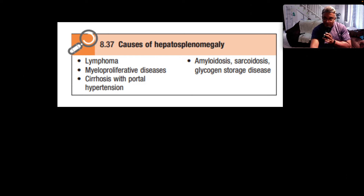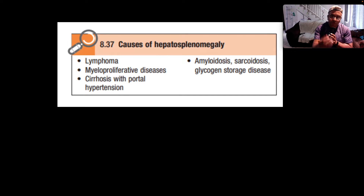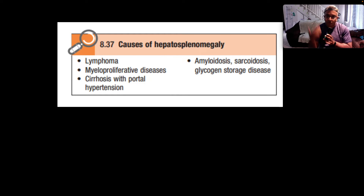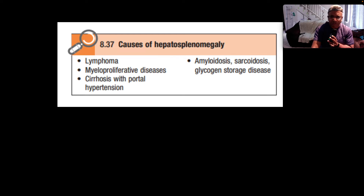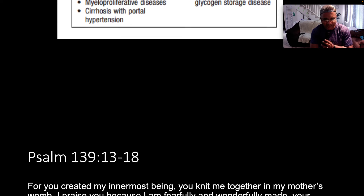Here are causes of hepatosplenomegaly: most likely lymphoma, myeloproliferative disease, cirrhosis, portal hypertension, or amyloidosis, sarcoidosis, glycogen storage diseases like Hunter's, Hurler's, and Gaucher's, and all those related conditions.